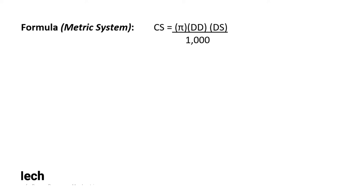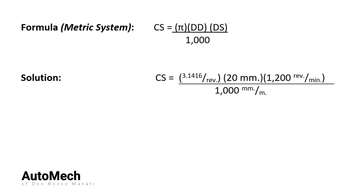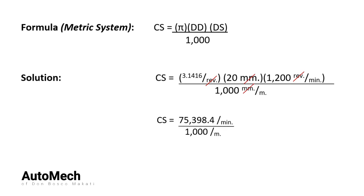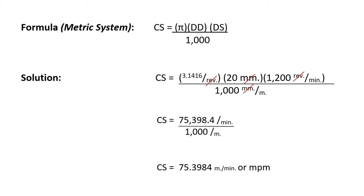Going back to our cutting speed formula: CS is equal to pi times DD times DS divided by 1000. Substituting the variables using the given values, we get CS is equal to pi times 20mm times 1200 RPM divided by 1000. Cancel out the units then solve, remembering to observe the PEMDAS rule. The final answer is: CS or cutting speed is equal to 75.3984 meters per minute, or MPM.